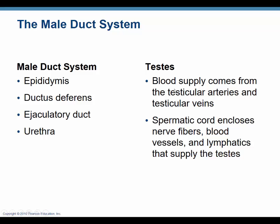The blood supply to the testes includes arteries and veins housed within the spermatic cord, which also contains nerve fibers and lymphatics to drain excess fluid. Because the testes are subject to gravity, in elderly men with failing hearts, the scrotal sac can fill with excess fluid. The scrotum can become the size of a softball or even a volleyball. Those patients typically end up in the hospital needing diuretics to get rid of that excess fluid.